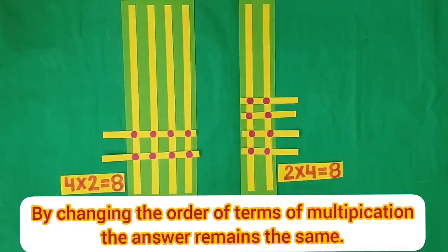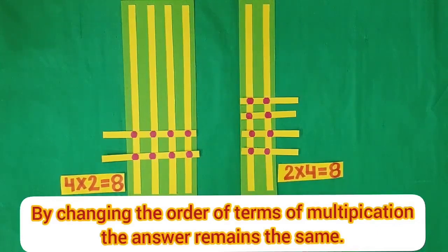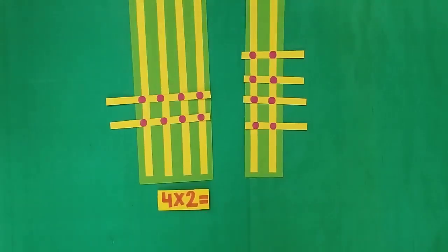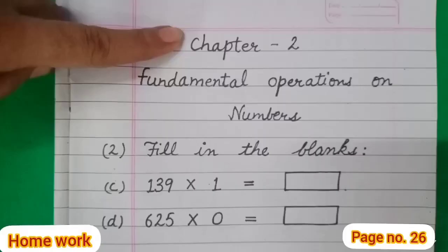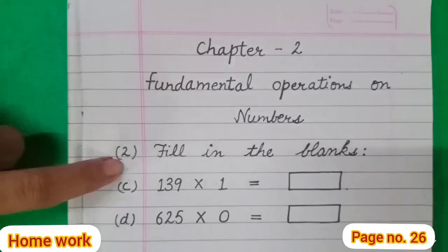We have 4 multiplied by 2 is equal to 8 and 2 multiplied by 4 is also equal to 8. It means 4 multiplied by 2 is equal to 2 multiplied by 4. In this way, we have learned the properties of multiplication. Dear students, do chapter 2's second sum in your notebooks — fill in the blanks, part C and D. Thank you.